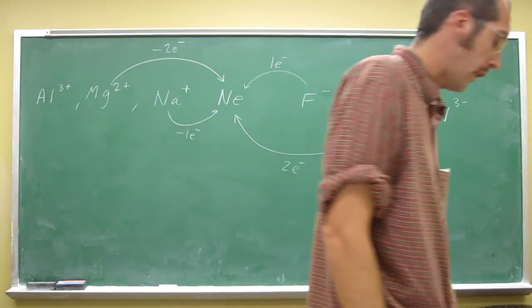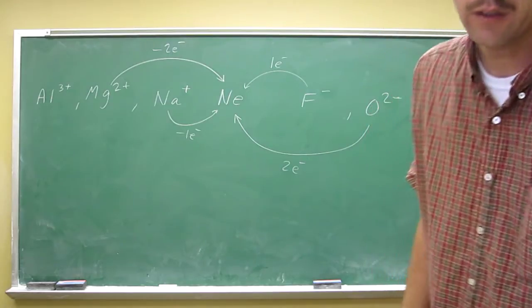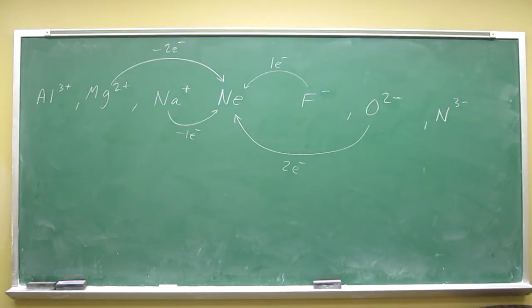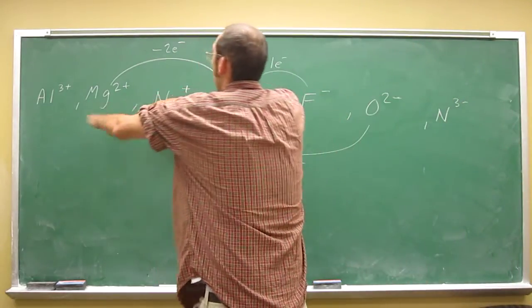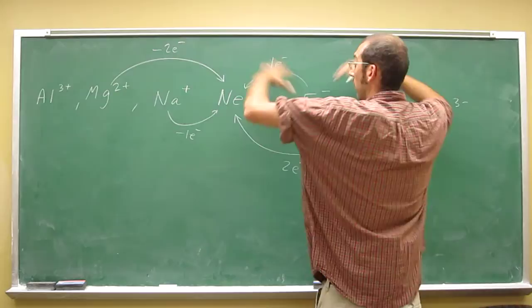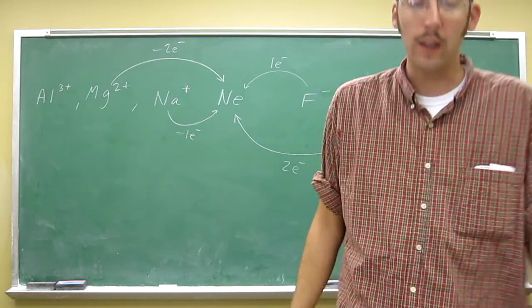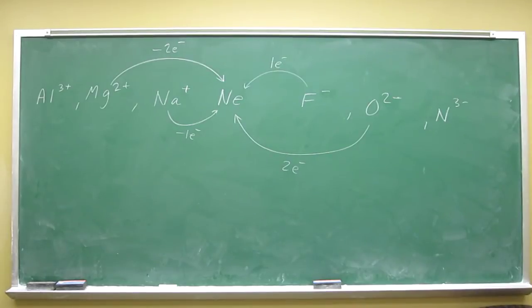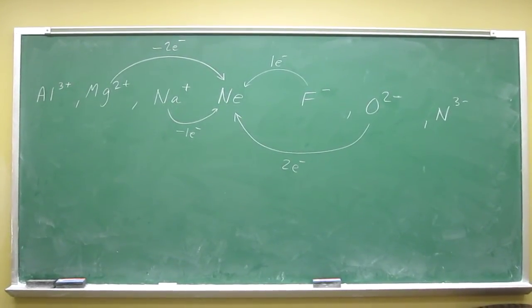Okay, so they all go to the neon configuration when they either lose or gain their particular electrons. So all of these ions, these three and these three, all six of them are isoelectronic with each other because they're isoelectronic with neon. So hopefully that answers that question in a little more detail than I was expecting.